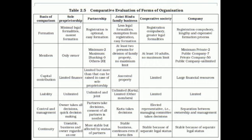The fourth point is liability. In sole proprietorship, the liability is unlimited. In partnership, it is also unlimited and joint. In joint Hindu family business, the liability is unlimited only for the Karta; for the remaining members it is limited. In cooperative society, the liability is limited. For joint stock company, the liability is also limited.